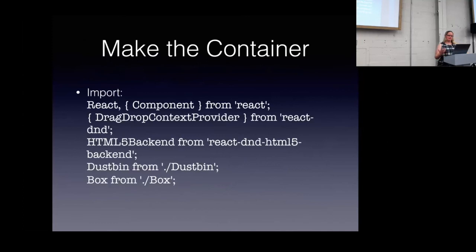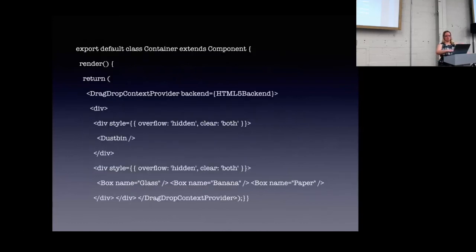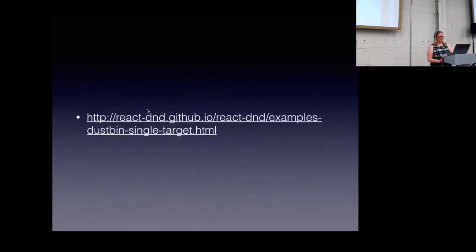Now we just need to make the container. This is where we import our dustbin — the target we just made — and our box. This is also where we need our HTML5 backend. And this is the whole entire thing: we have a render where we have DragDropContextProvider from React DnD, our HTML5 backend, and then a div with our dustbin and a div with the boxes we want to be able to drag.